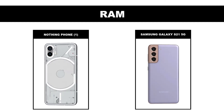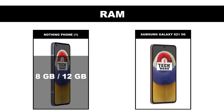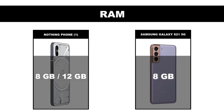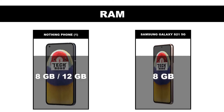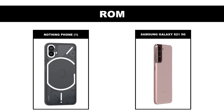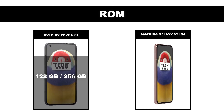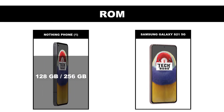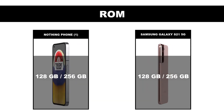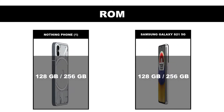RAM: Nothing Phone 1 is 8GB and 12GB, Samsung Galaxy S21 5G is 8GB. Storage: Nothing Phone 1 is 128GB and 256GB, Samsung Galaxy S21 5G is 128GB and 256GB.